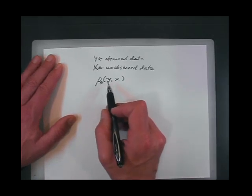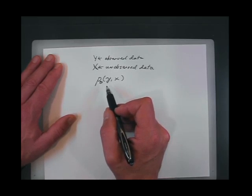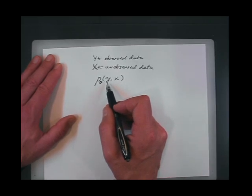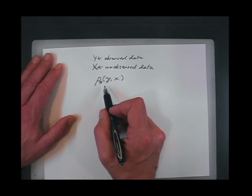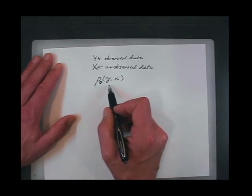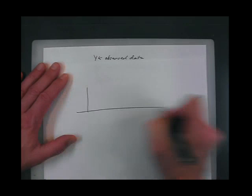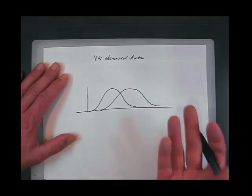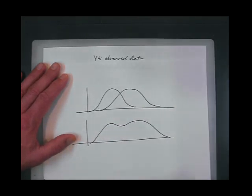Say Purdue students are taller. You're measuring the height of each student, but you lost the mapping which tells you which students are from Purdue. So if you take all the tall students and say they must be Purdue students, you're going to get the wrong estimate of how tall they are. The picture is like this: you have two populations, one with a distribution like that and the other with a distribution like that. The combined distribution looks like this. If you use a threshold classifier, the estimates you'll get for the mean will be totally off.